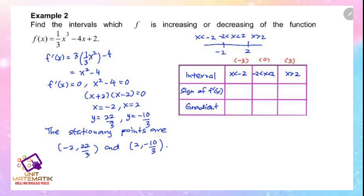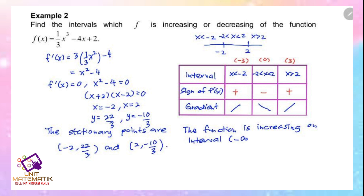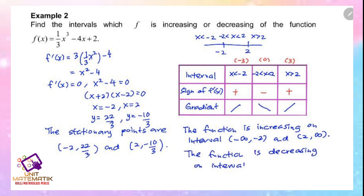Substitute all test values into f prime to find the signs. For x less than negative 2, the value is positive. For the interval negative 2 to 2, the value is negative. For x greater than 2, the value is positive. So the gradient is increasing, then decreasing, then increasing again. The function is increasing on the interval negative infinity to negative 2 and 2 to infinity, and decreasing on the interval negative 2 to 2.